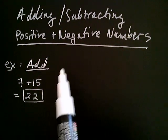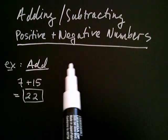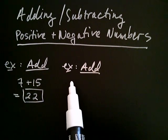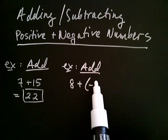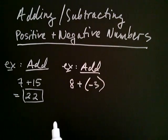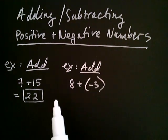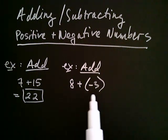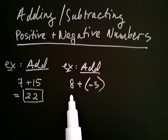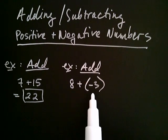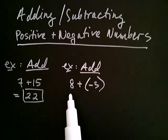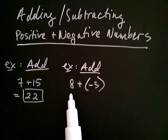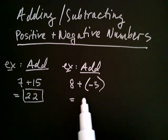What if instead of adding positive seven to positive 15, we wanted to add eight to negative three? If we think about this in terms of money and this was your bank statement, a positive eight would correspond to a deposit, and a negative three would correspond to a withdrawal. So if you had a positive eight and you saw a withdrawal of three, you put eight dollars in but then withdrew three, so you'd have a net total of five.